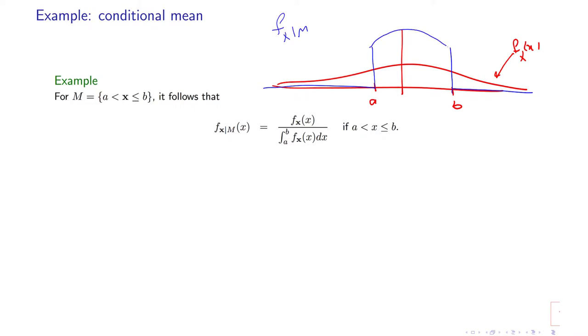This is going to be the conditional distribution—zero here and then zero there. The expected value of the new distribution should be somewhere between A and B. So the expected value of X given the event M, which is X between A and B,